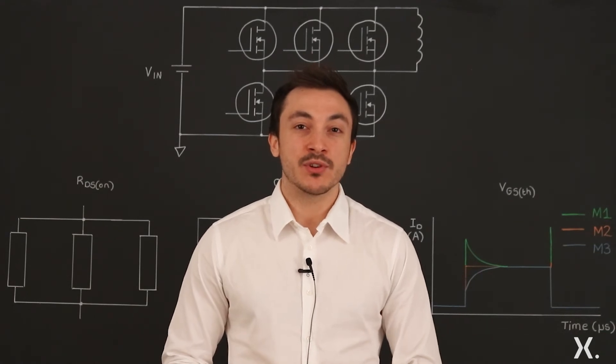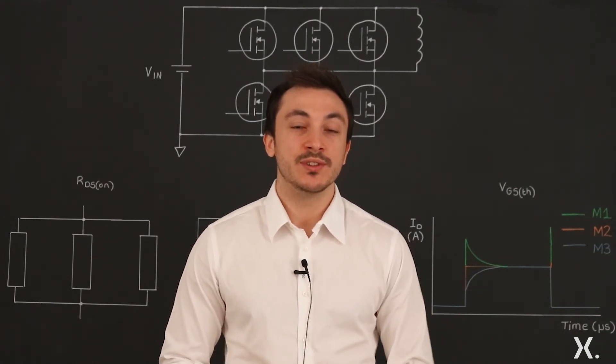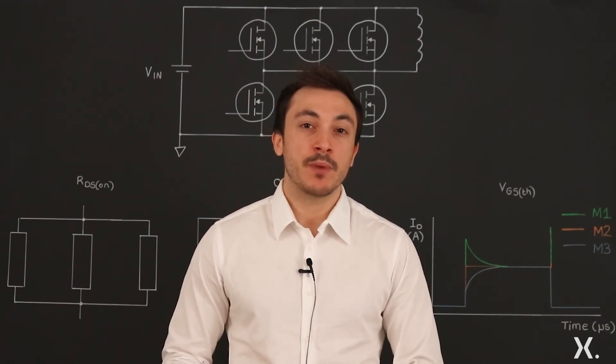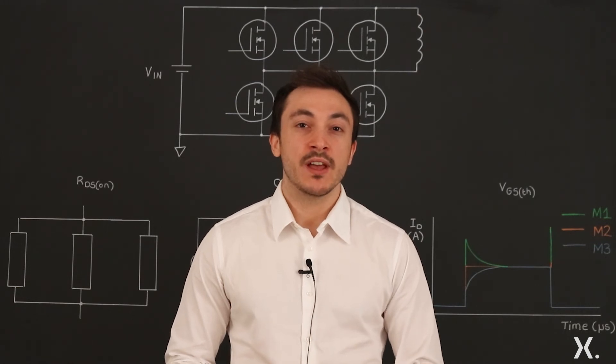Moreover, the negative temperature coefficient of the threshold voltage will decrease the threshold voltage of M1 even further. However, in Nexperia's power MOSFETs, we often observe more than three times less spread in threshold voltage when considering batch-to-batch variation.